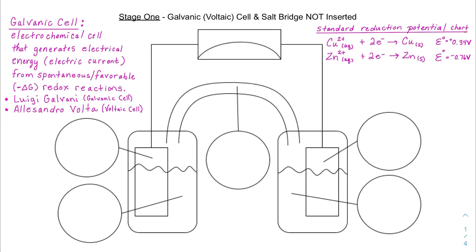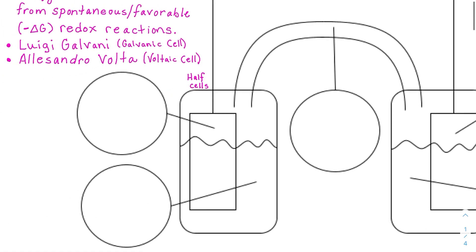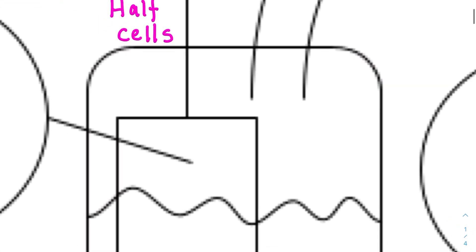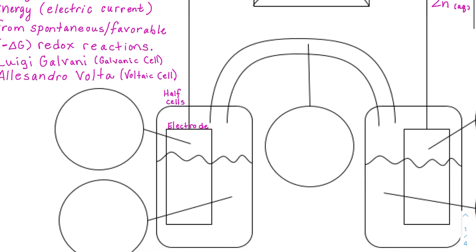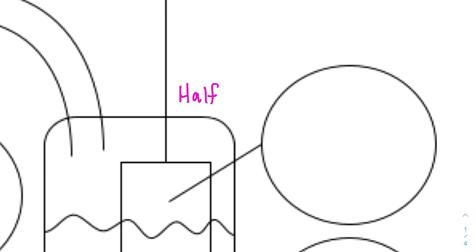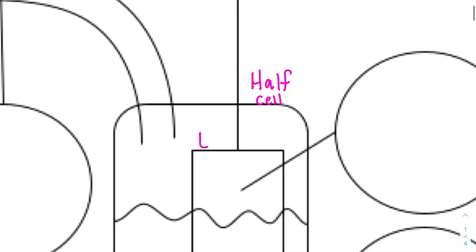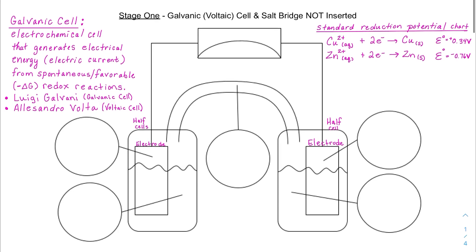Let's look at the key components of all galvanic cells. First, you have to separate your two half reactions into two half cells. These half cells could be composed of a beaker, a well plate, or a test tube. In each half cell you have to have an electrode — typically a metal, though other choices can be used. The other half cell on the opposite side is where the other part of the reaction takes place, involving electrons being exchanged, and it also has its own electrode.